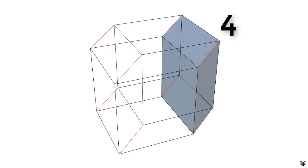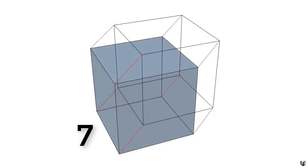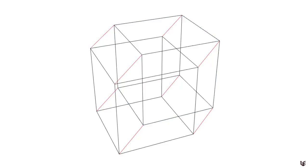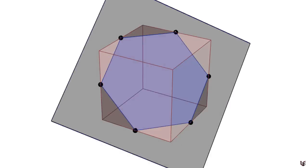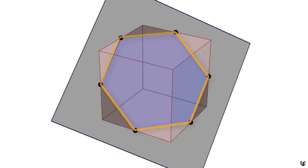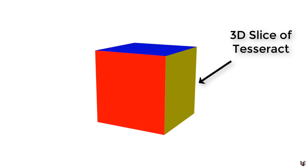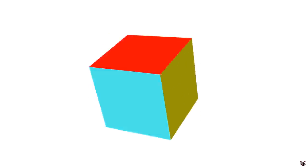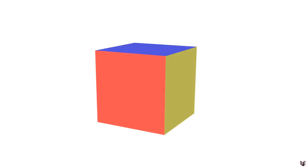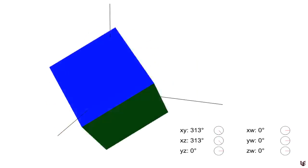To determine what a 3D slice of the hypercube looks like, we find the intersection of our hyperplane with each of the eight cube cells that make up the tesseract boundary. Since an intersection of a plane with a cube can only be a triangle, quadrilateral, pentagon, or hexagon, we find the points of intersection of the w equals zero hyperplane with the edges of each cube cell, connect the dots to make a polygon, and repeat for all eight cells. The polygons come together to form a closed boundary defining the 3D slice. This is a 3D slice of our tesseract halfway intersecting our reality.